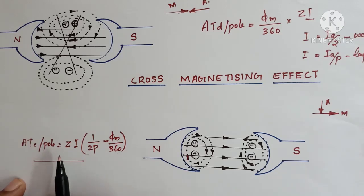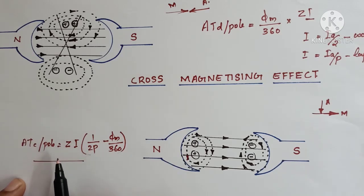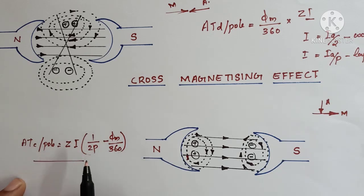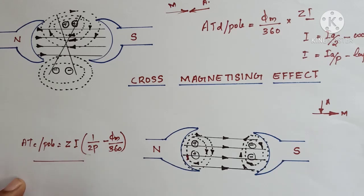The cross-magnetizing effect can be calculated using this equation. Cross-magnetizing ampere turns per pole equals Z × I × [(1/2P) − (φm/360)]. All the terms here are familiar from before.